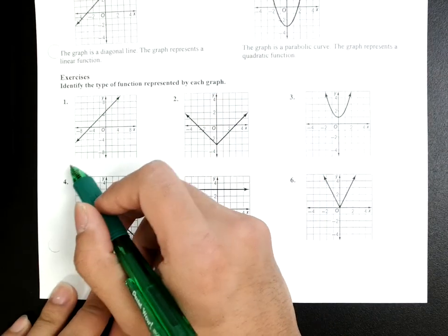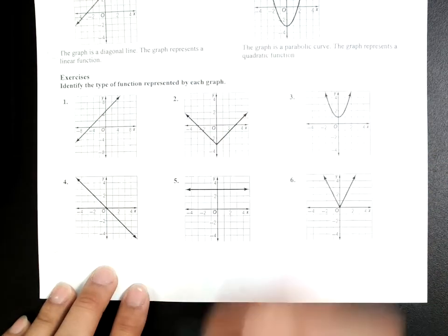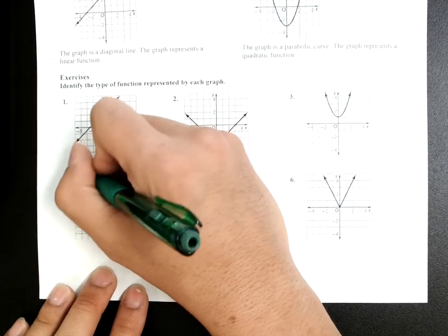One, what type of parent function is that? What's the parent function? Well, it's a straight line. If it's a straight line, I know that's linear.